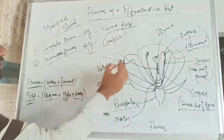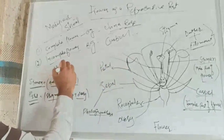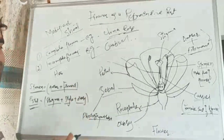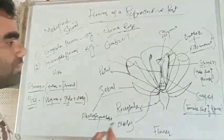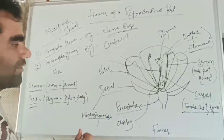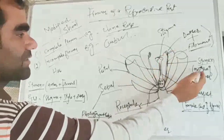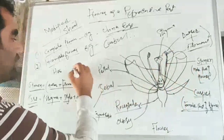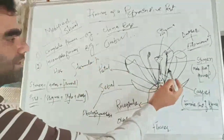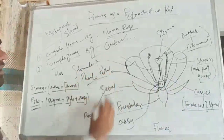One more classification: a hermaphrodite or bisexual flower is one in which both the male and female parts are present. A unisexual flower is one in which only one part is present. A flower in which only the stamen — the male part — is present is known as a staminate flower. And a flower in which only the female part is present is known as a pistillate flower.